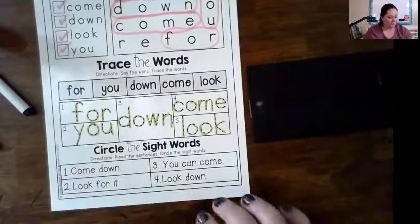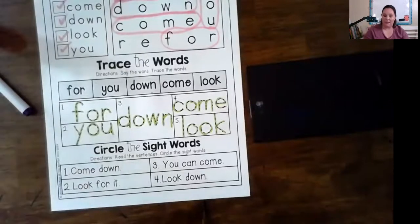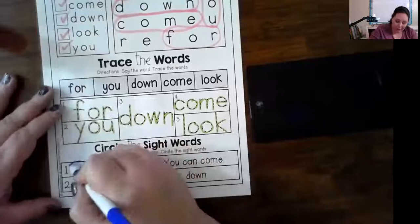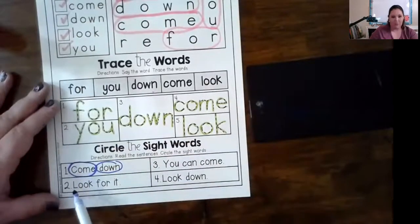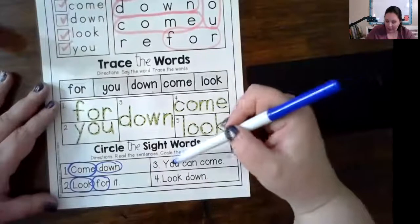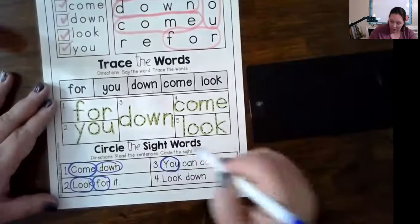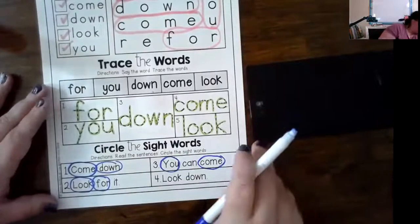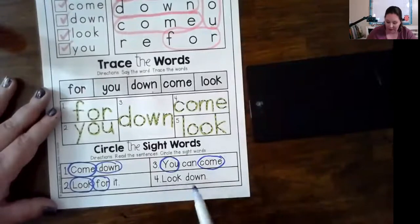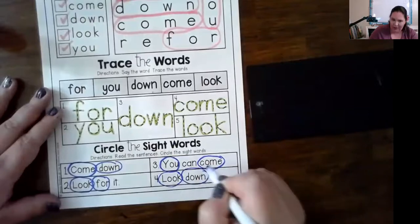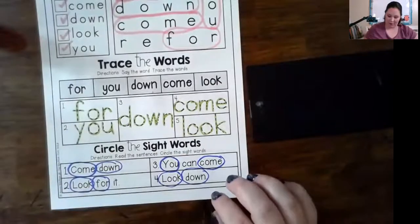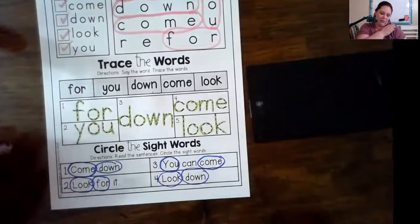Now we have circle the sight words. Read the sentences, circle the sight words. Come down, they're both on our list. Number two, look for it. Here's look. Four. Number three, you can come. Are you attacking the- Sherbert's really weird. Number four, look down. I just heard a weird sound, is Lynn sneaking out of bed again? Awesome. Give yourself a pat on the shoulder.